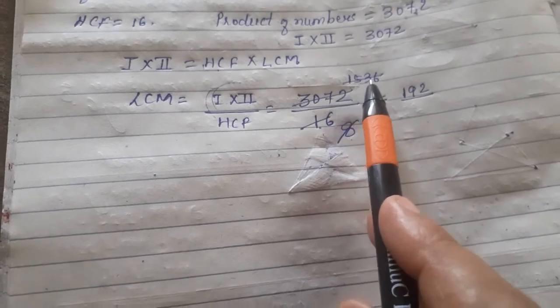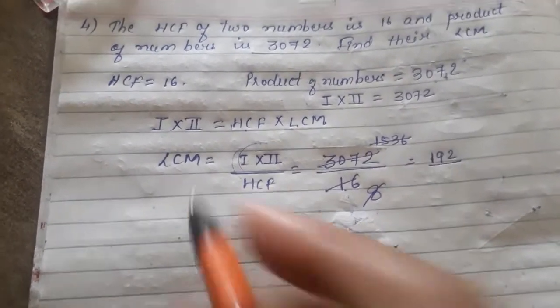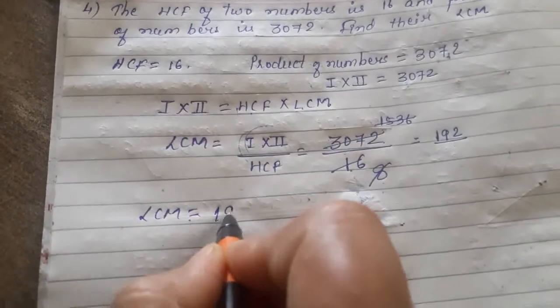When you will divide 1536 by 8, your answer will be 192. Means our LCM is 192.